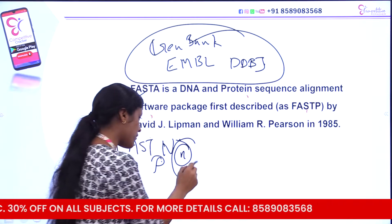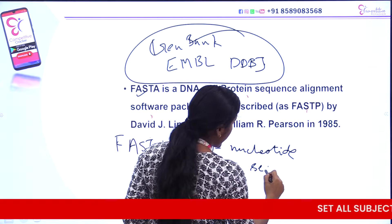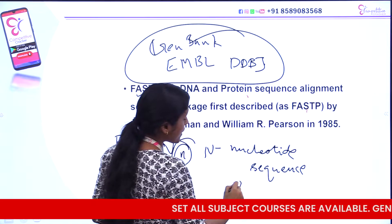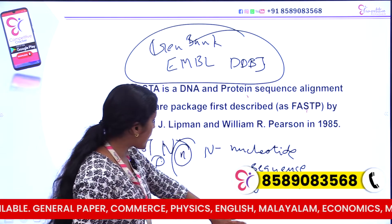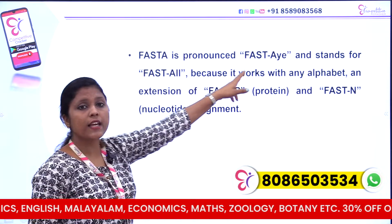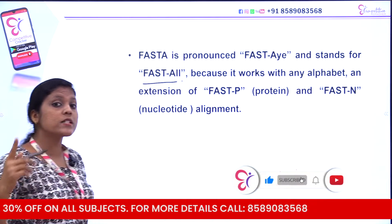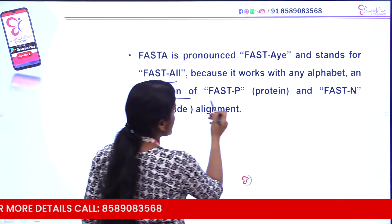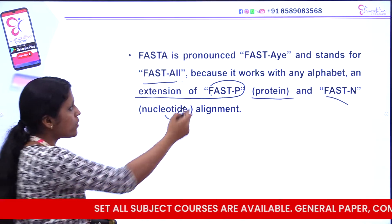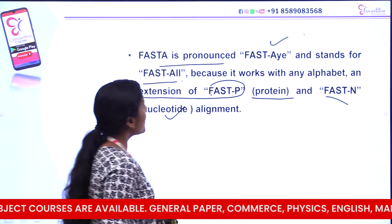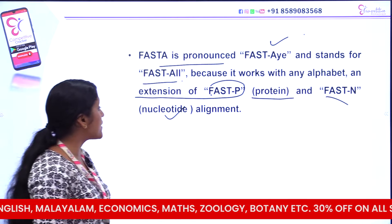FASTA is pronounced FASTA-I and it stands for FASTA-ALL because it works with any alphabet. It is either an extension of FASTA-P for protein or FASTA-N for nucleotide alignment. FASTA-ALL, FASTA-I — it works with any alphabet, covering both FASTA-P protein and FASTA-N nucleotide alignment.